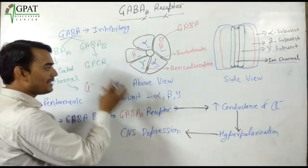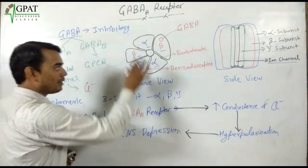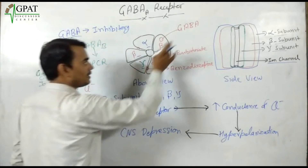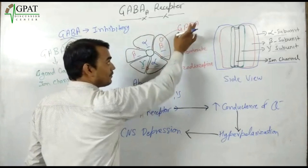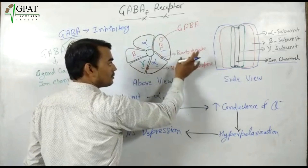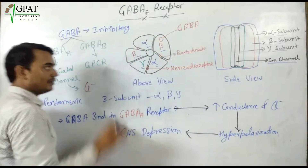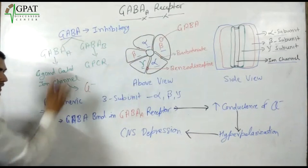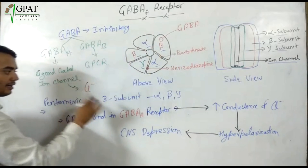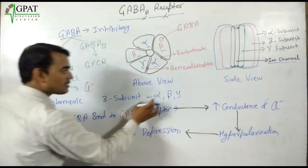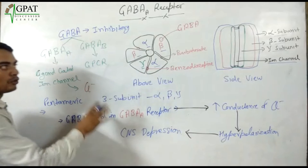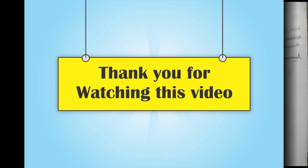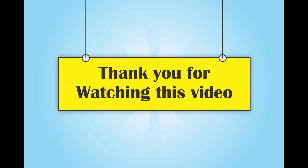So in summary, these are the basic points about the GABA-A receptor: it has three binding sites — for GABA, for barbiturate, and for benzodiazepine. It is pentameric in nature with three subunit types: alpha, beta, and gamma, arranged as two alpha, two beta, and one gamma subunit.